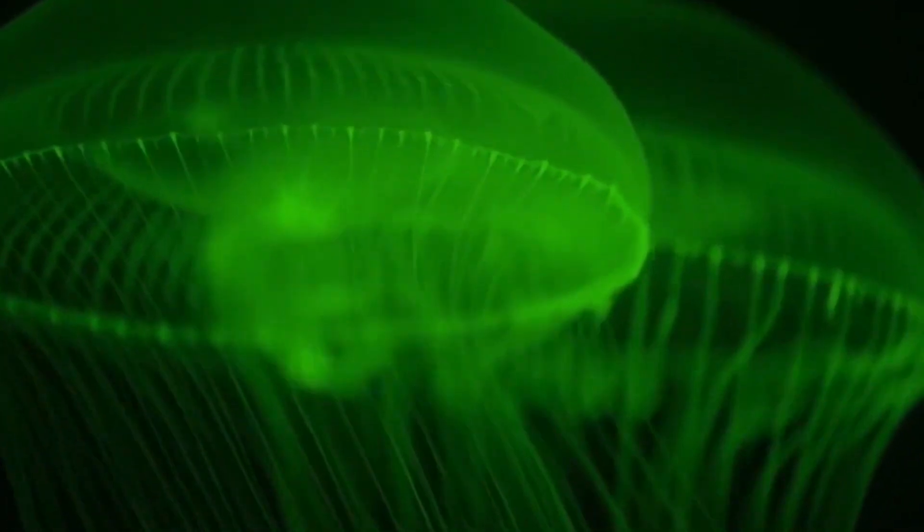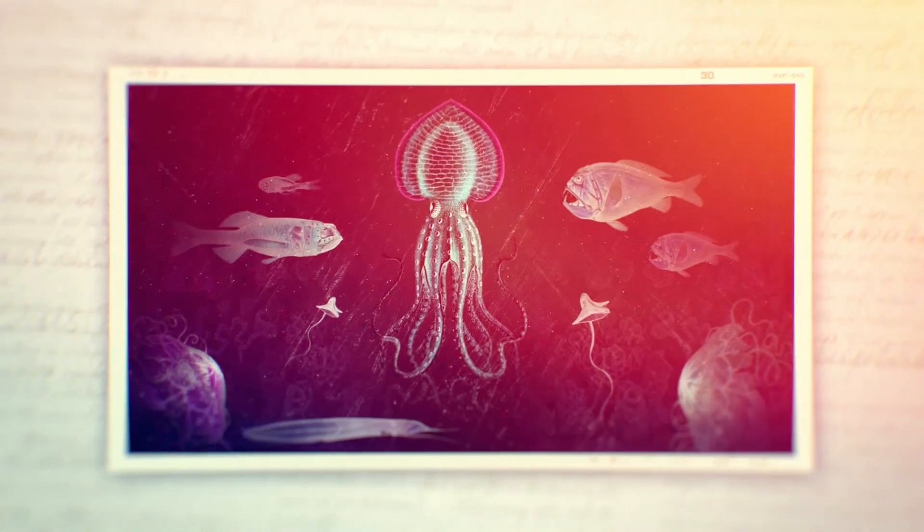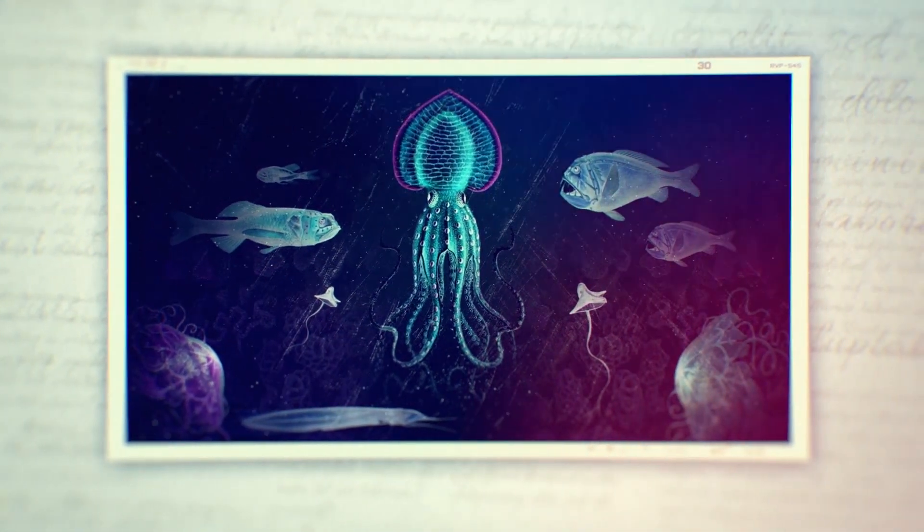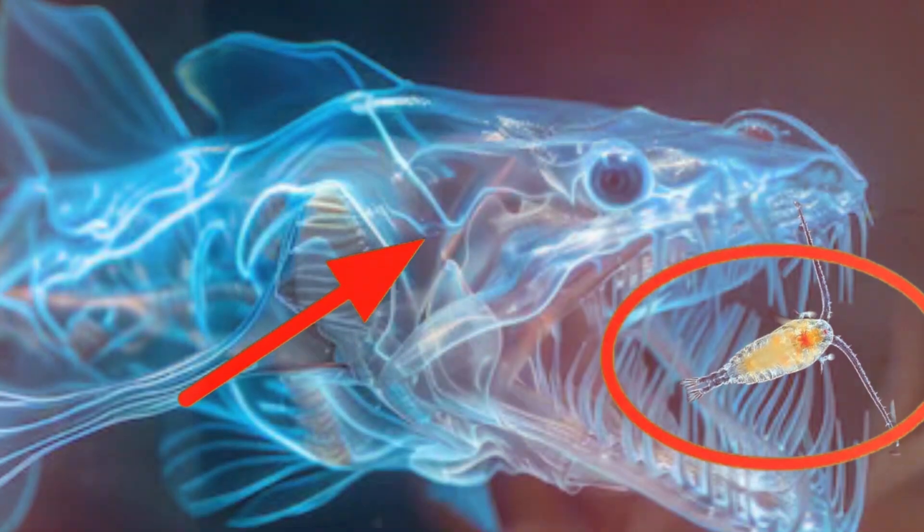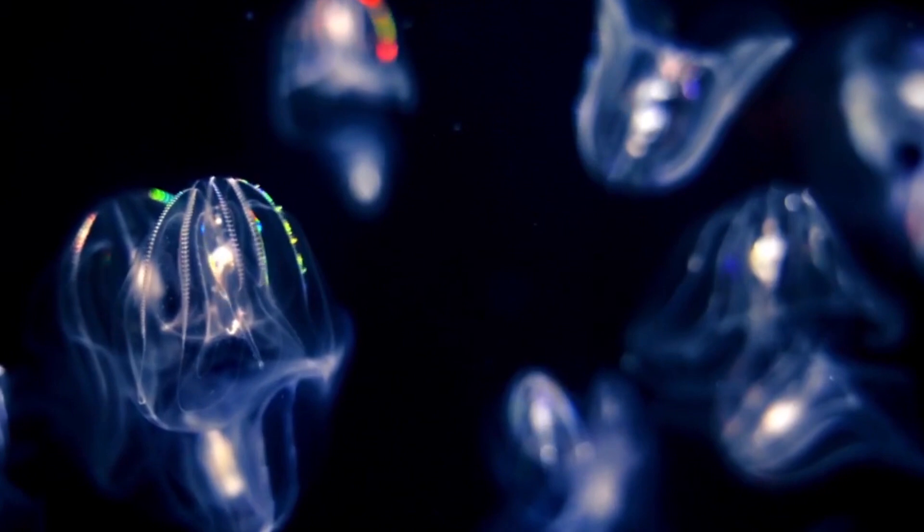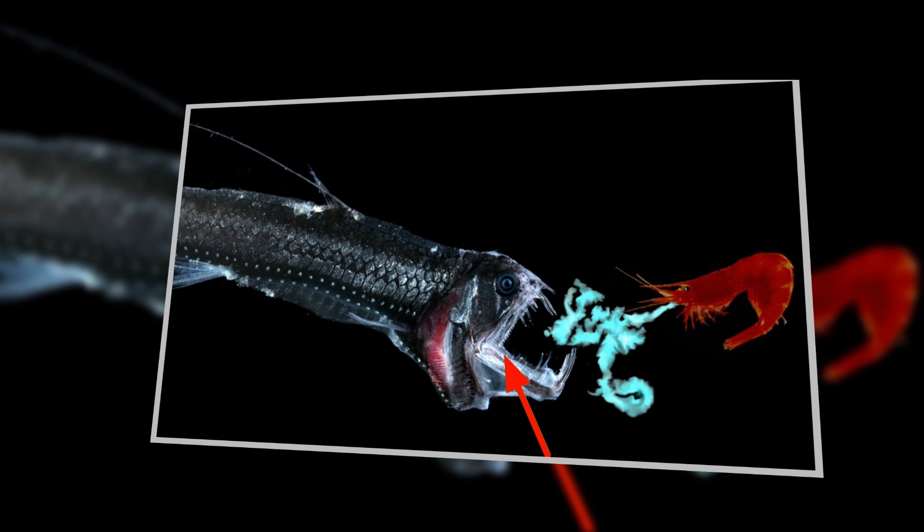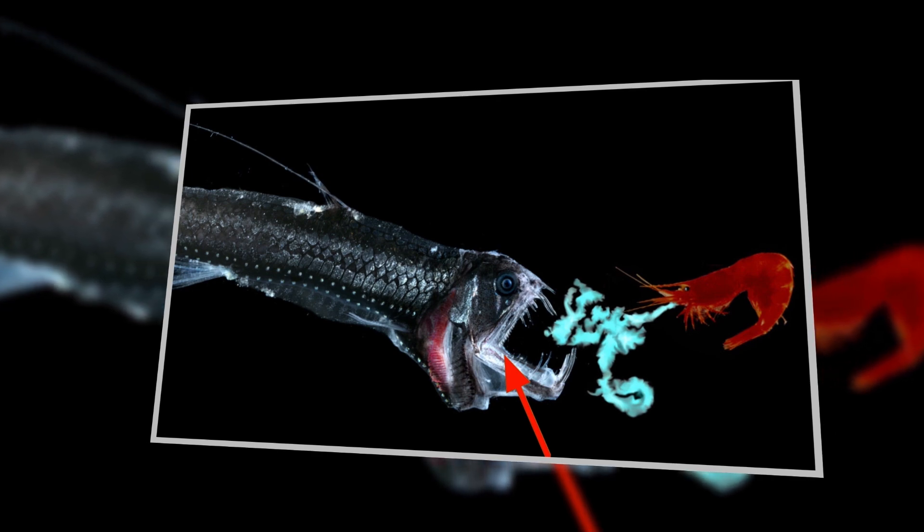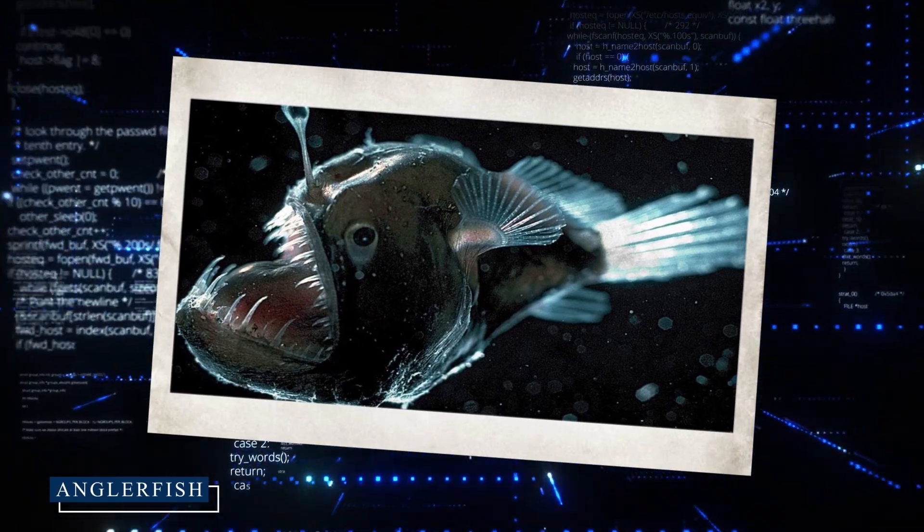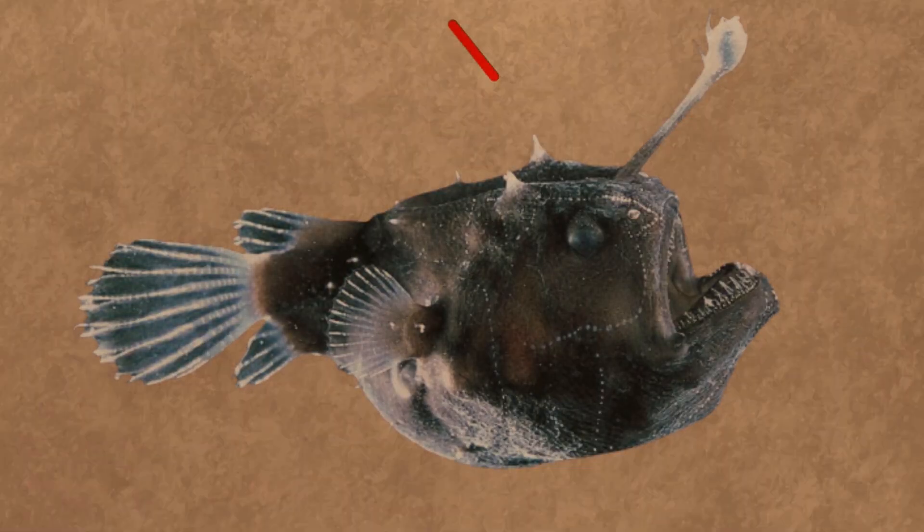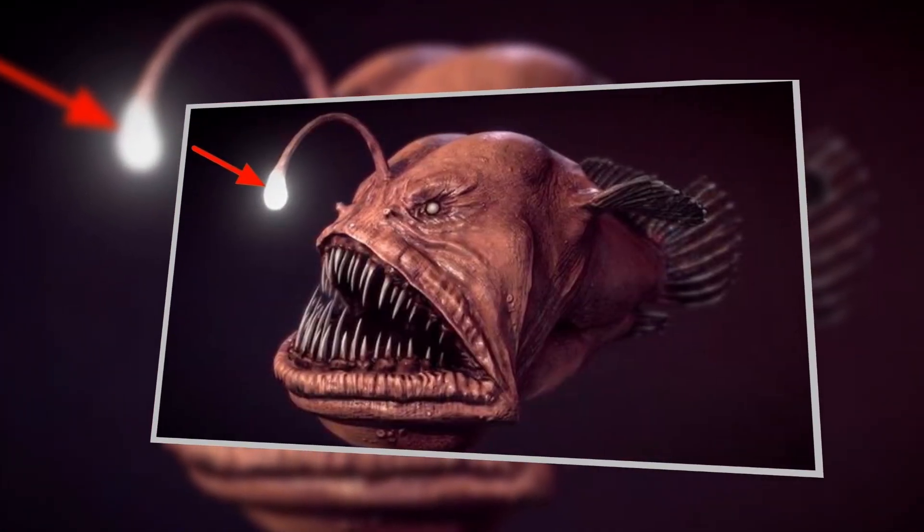In the challenging environment of the deep sea, bioluminescence serves multiple crucial purposes. Let's dive into the various ways deep sea creatures use their living lights to survive and thrive in the darkness. One of the most fascinating uses of bioluminescence is as a tool for hunting. Some deep sea predators have evolved to use their light-producing abilities as a lure, attracting unsuspecting prey right into their waiting jaws. The poster child for this strategy is the infamous anglerfish, a creature with a disproportionately large head, needle-sharp teeth, and a long fishing rod-like appendage protruding from its forehead.